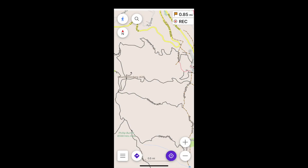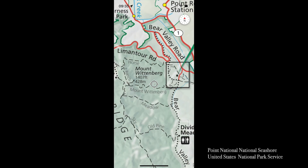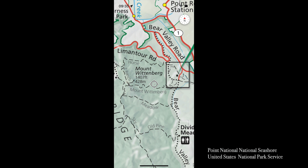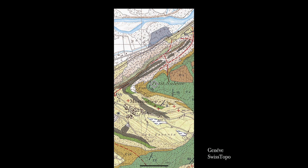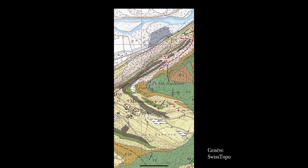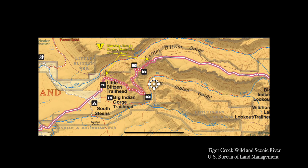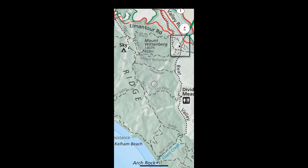I think Avenza's advantage lies elsewhere. Vector maps are computer generated, whereas the raster maps used by Avenza are usually created by map designers with specific audiences in mind, and therefore can potentially be more useful in understanding what's around you. Of course, you can always run both apps at once.